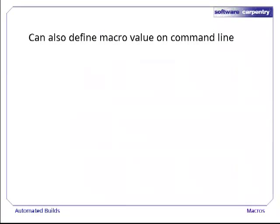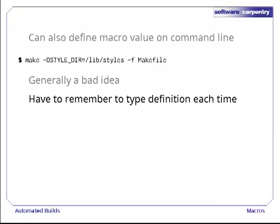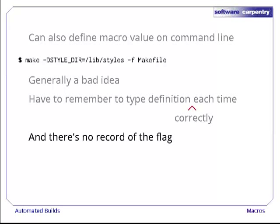We can also solve this problem by defining styledir on the command line each time we run make. To do this, we use the -D flag and specify the macro's name and the value we want to give it. This is almost always a bad idea, though. We have to remember to type the definition each time, and type it correctly each time. This isn't too bad with just one definition, but if there are half a dozen, you see the problem. There's also no record in the makefile itself of the flag, which makes life harder for other people who want to recreate our paper.